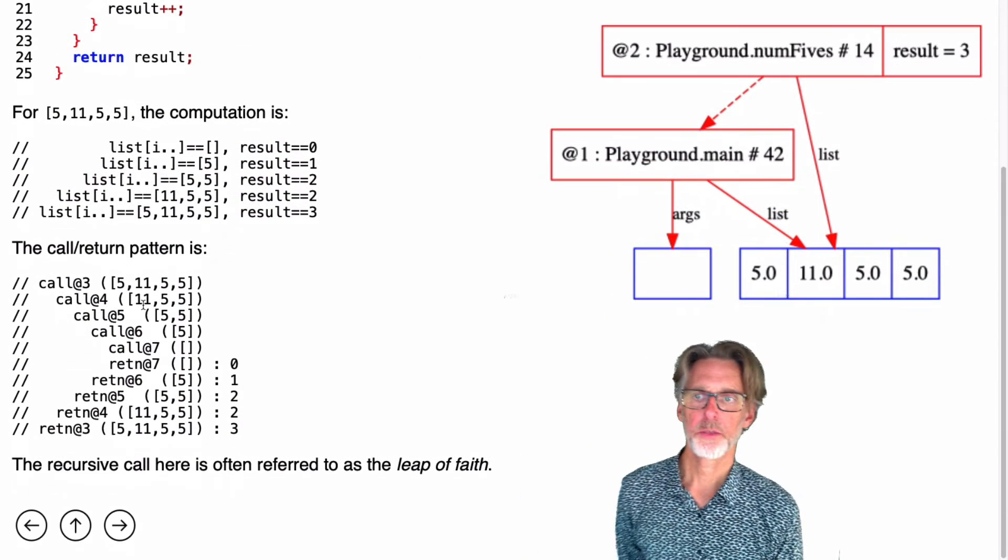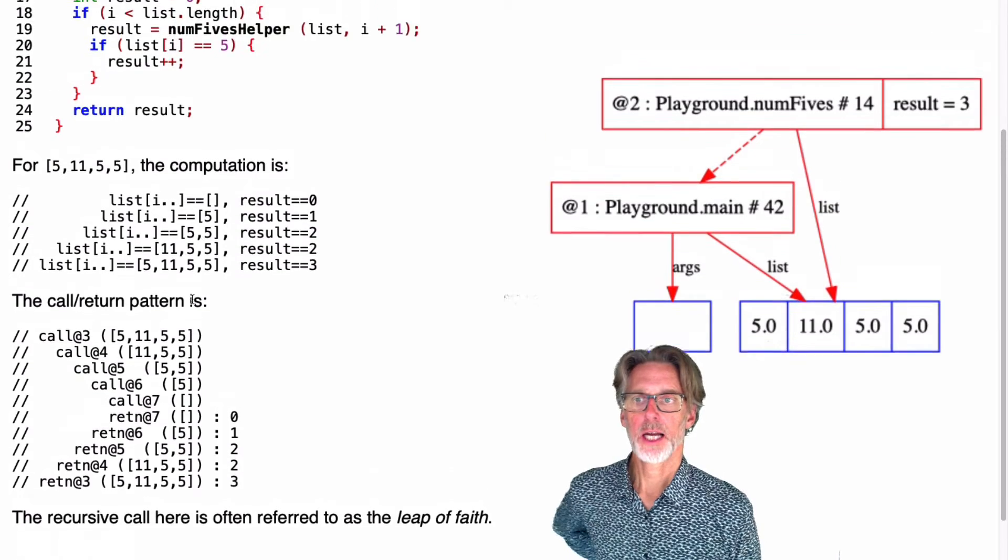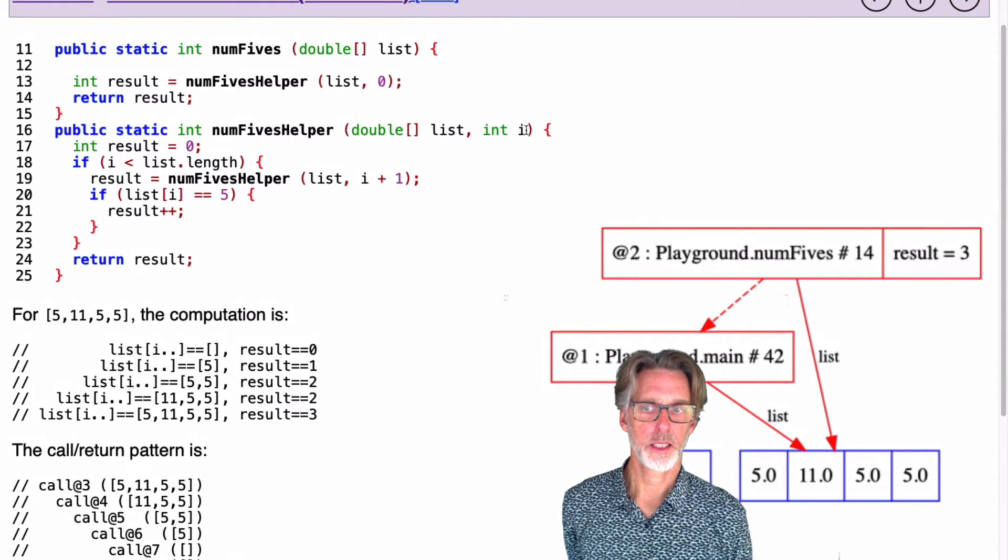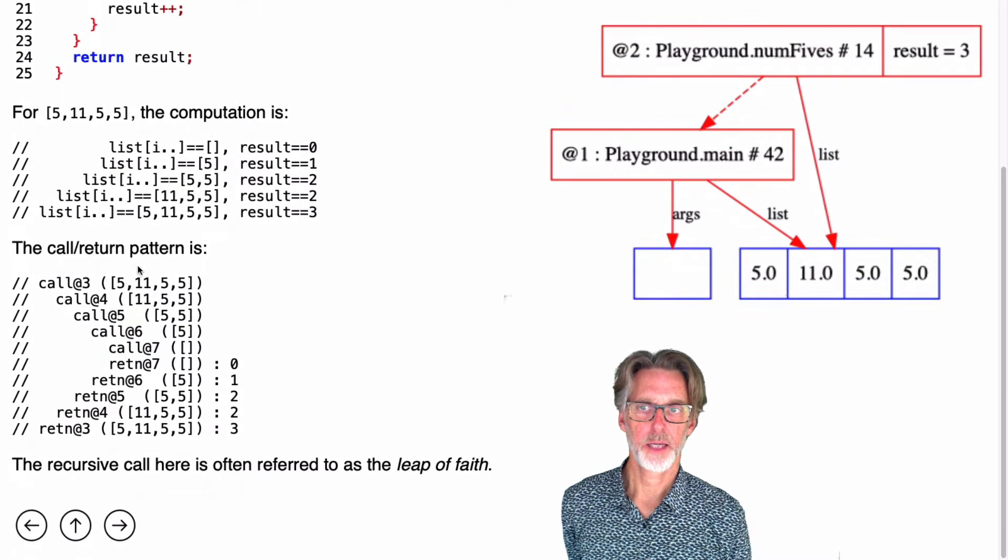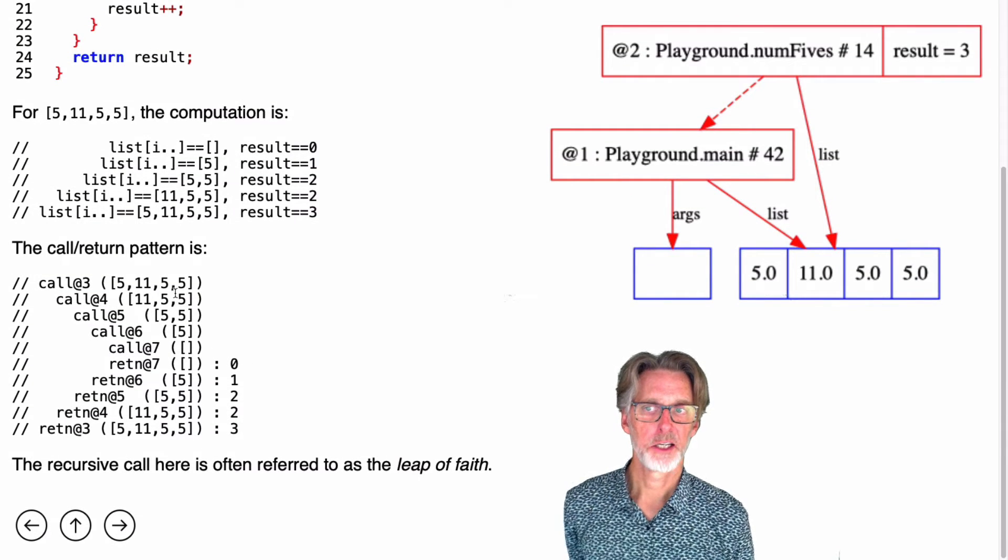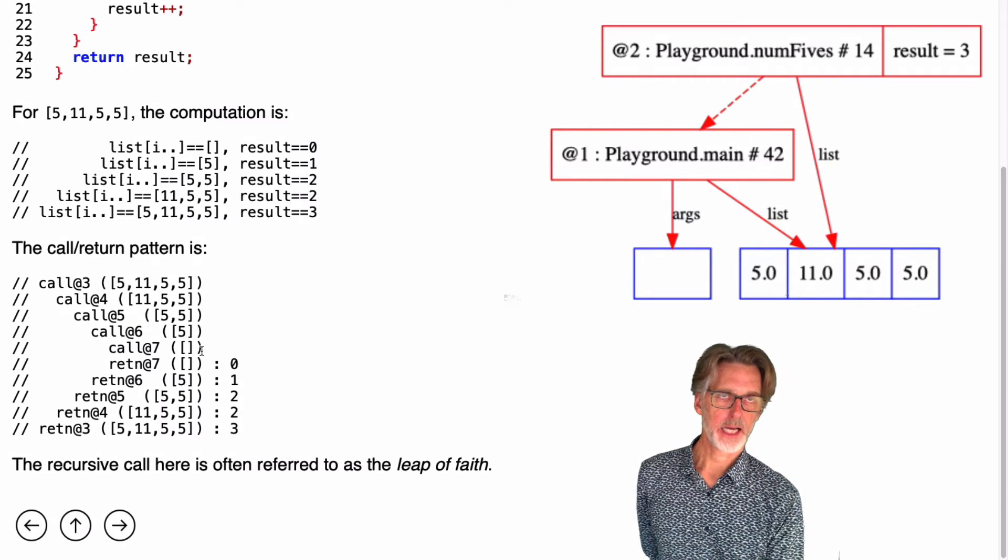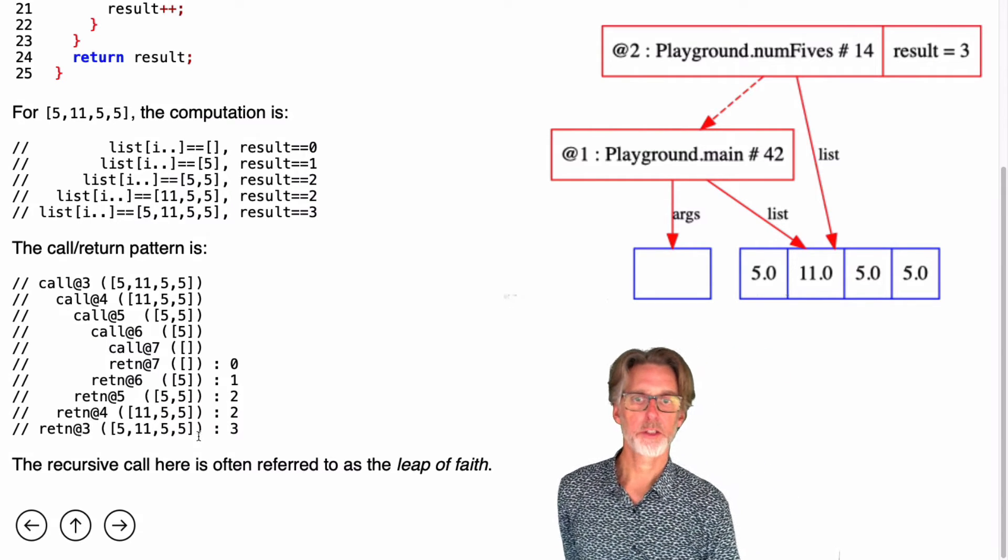So here the call return pattern is different. Note that I have one fewer parameters. I don't have the result as I compute forward. Instead, I'm computing that result going back. So my calls simply get me to the end of the list, and it's when I'm doing the returns that I actually do work.